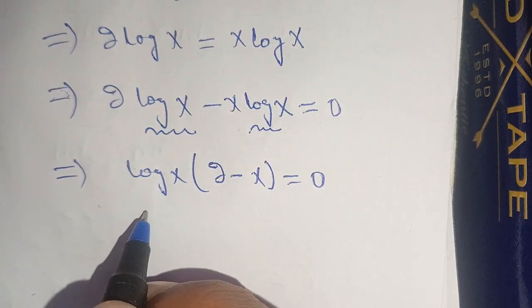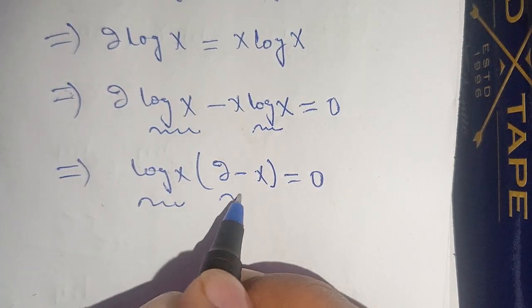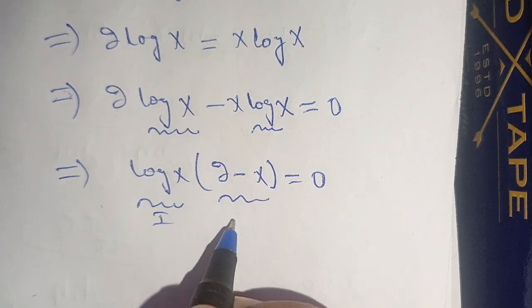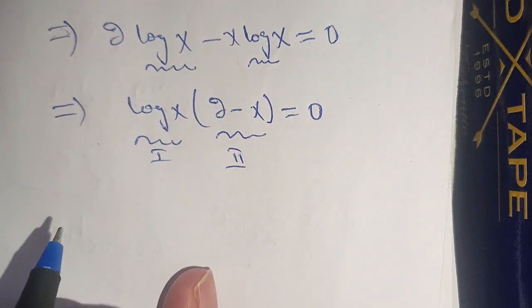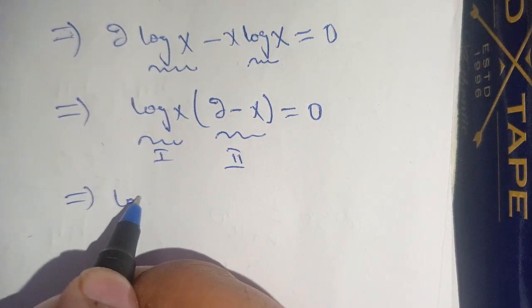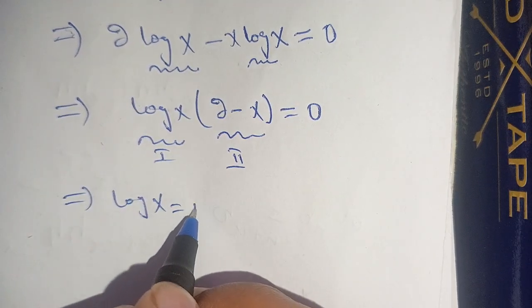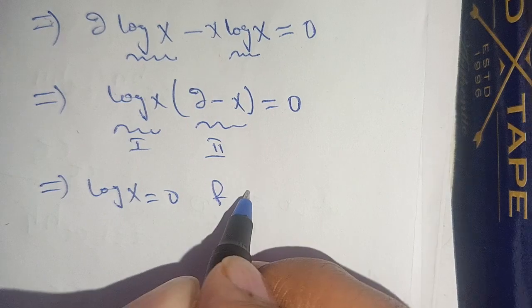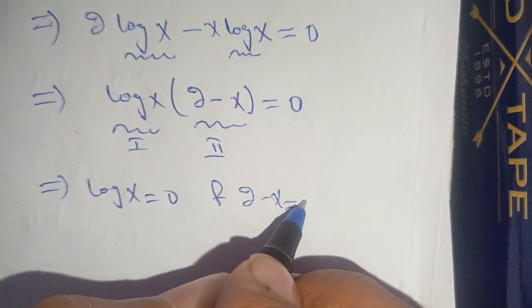Here are two terms: the first term is log(x) and the second term is (2 - x). On equating both terms to 0, we have log(x) = 0 and 2 - x = 0.